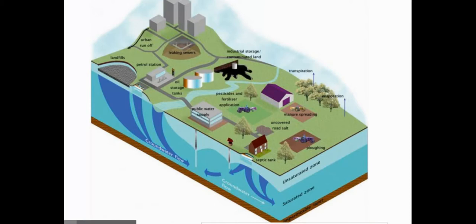These are all examples of different things that can contaminate the groundwater. Essentially, all you really need is for this stuff to spill out onto the surface. Gas stations and oils, tanks — that stuff can get into the ground and contaminate the groundwater. Most of the time it will float on top of the groundwater, which we'll talk about a little bit later on, but that can be a major problem.